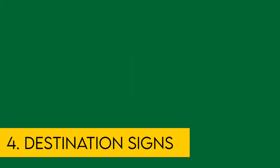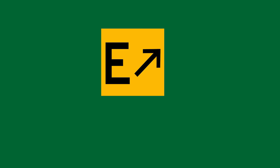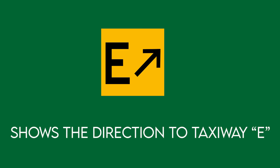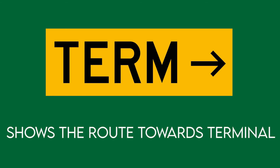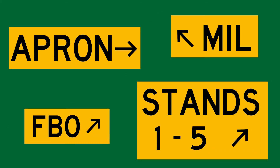Destination signs also have a yellow background with black text, indicating a destination on the airport, and always include an arrow showing the direction of the taxiing route. When the arrow indicates a turn, the sign is located prior to the intersection. Destinations commonly shown include runways, aprons, terminals, military areas, civil aviation areas, cargo areas, international areas, and fixed base operators.